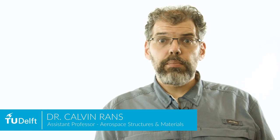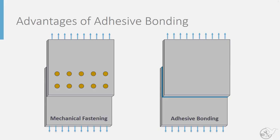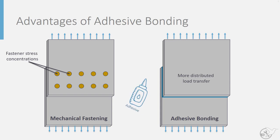Adhesive bonding, like welding, provides a distributed means of transferring load from one part to another. We can eliminate the stress concentrations induced by fastener holes and spread the load transfer out more evenly over the joint, making it a very attractive joining option. However, rather than relying on the melting and fusing of the parts as with welding, adhesive bonding uses an additional material to glue the two parts together. This can eliminate some of the material restrictions encountered in welding, but introduces its own set of challenges to deal with.